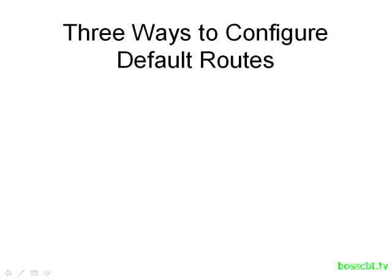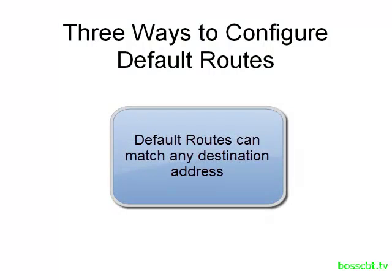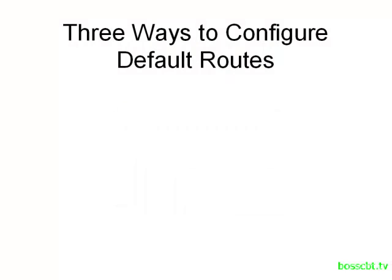Hello and welcome to this tutorial. We're going to show you three different methods you can use to configure a default route. We first introduced the concept of the default route in the ICN-D1 material, and just as a refresher, a default route is a catch-all. It will match any packet if a more specific route is not found in your IP route table. Default routes are very useful, simple to configure, and they can keep your route table very small, because one default route can represent many, many routes.